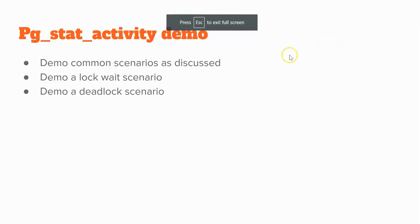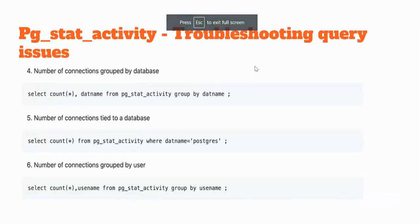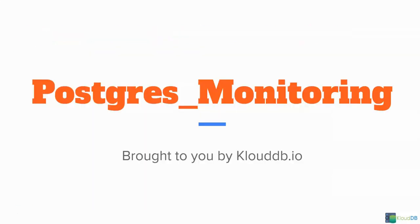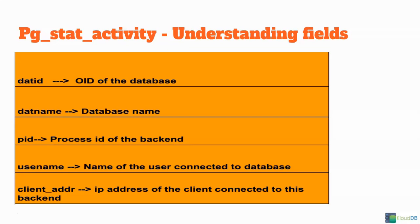Today we're going to discuss PG Stat Activity. When you try to monitor Postgres, PG Stat Activity is one of the tools you will be using on a regular basis. In this lecture, we're going to see what PG Stat Activity is and how to use it when you're troubleshooting various query issues. You use PG Stat Activity to do live troubleshooting. Let's say somebody complains that there's something going on in production and you log into the Postgres server and immediately use PG Stat Activity to look up the queries.